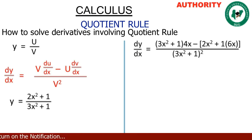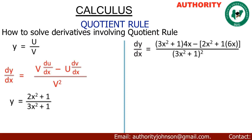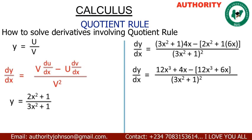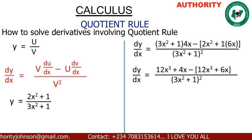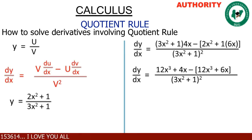So we have dY/dx equals (3s² + 1) times 4x, minus open bracket (2s² + 1) times 6x, all over (3s² + 1) squared. Now let's expand: 4x times 3s² gives us 12s³, plus 4x times 1 gives us plus 4x.